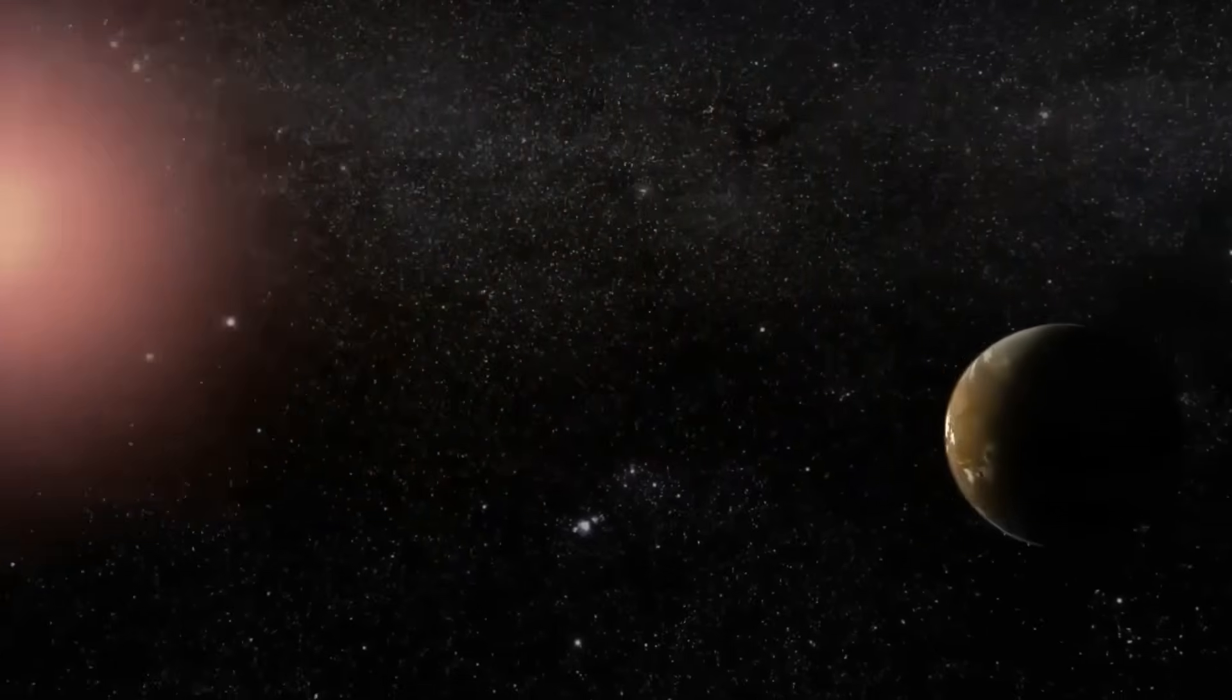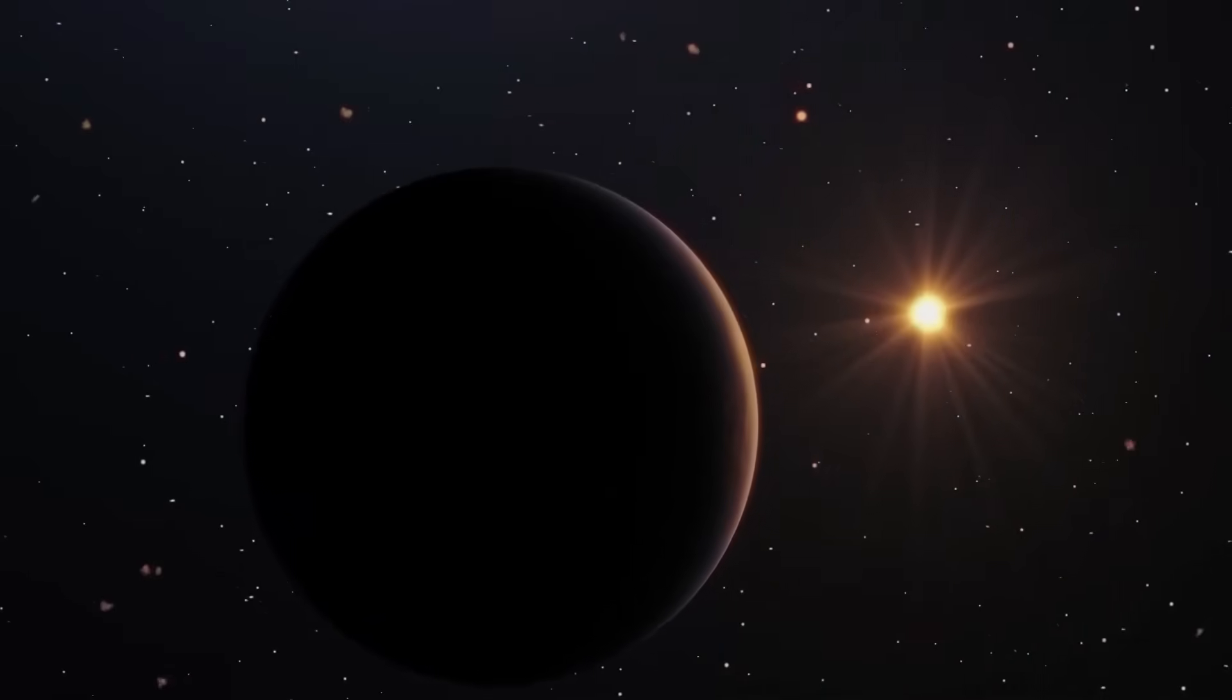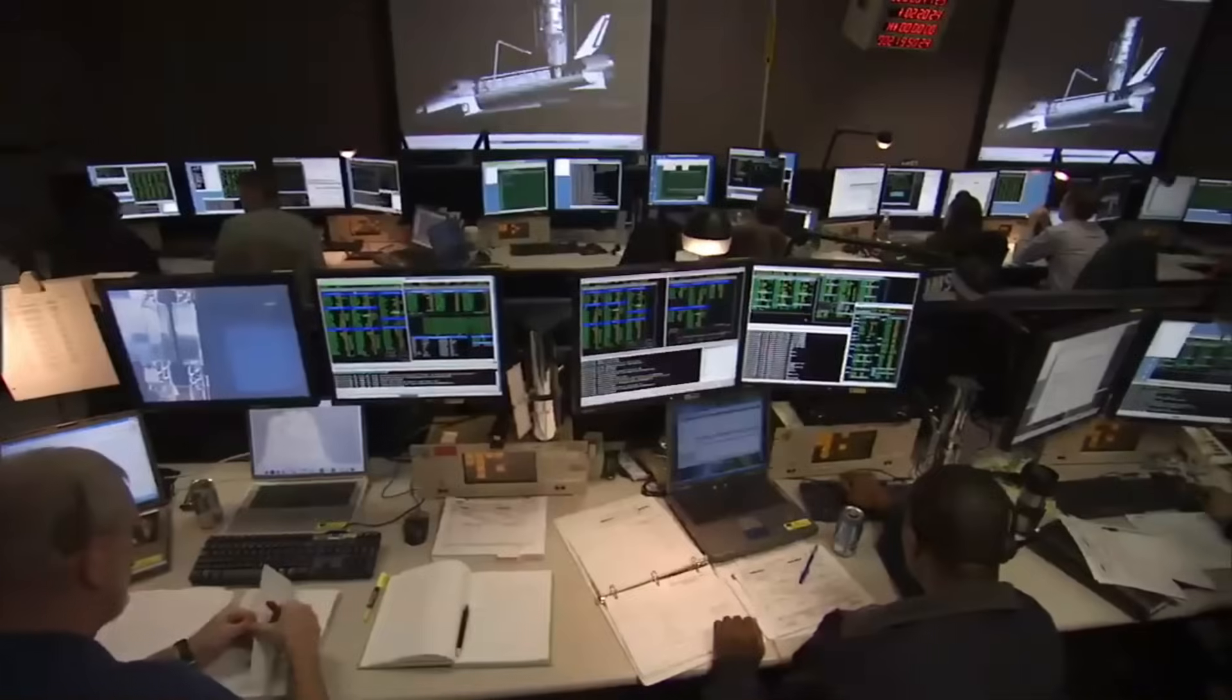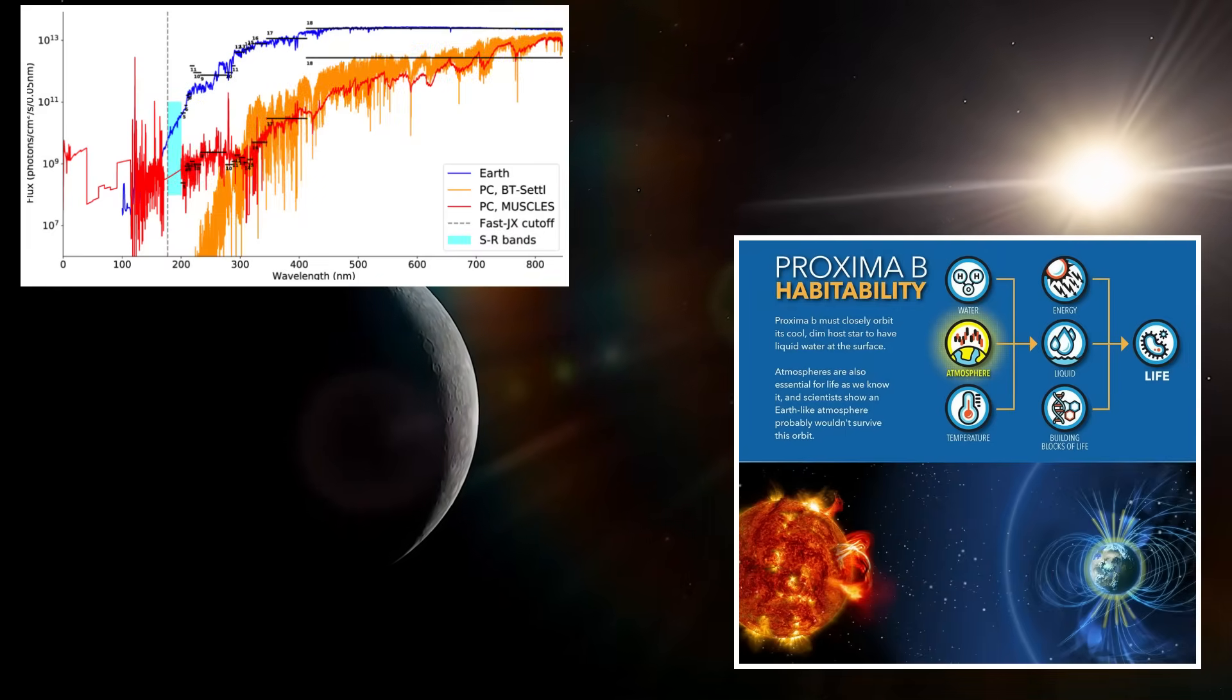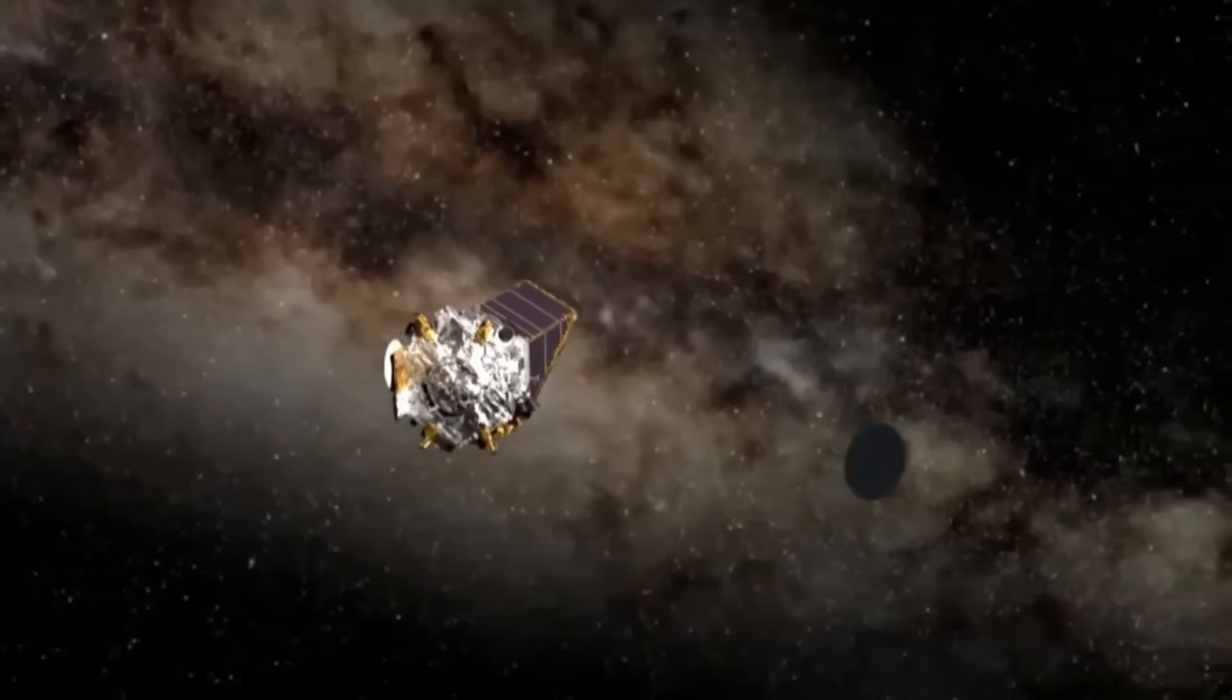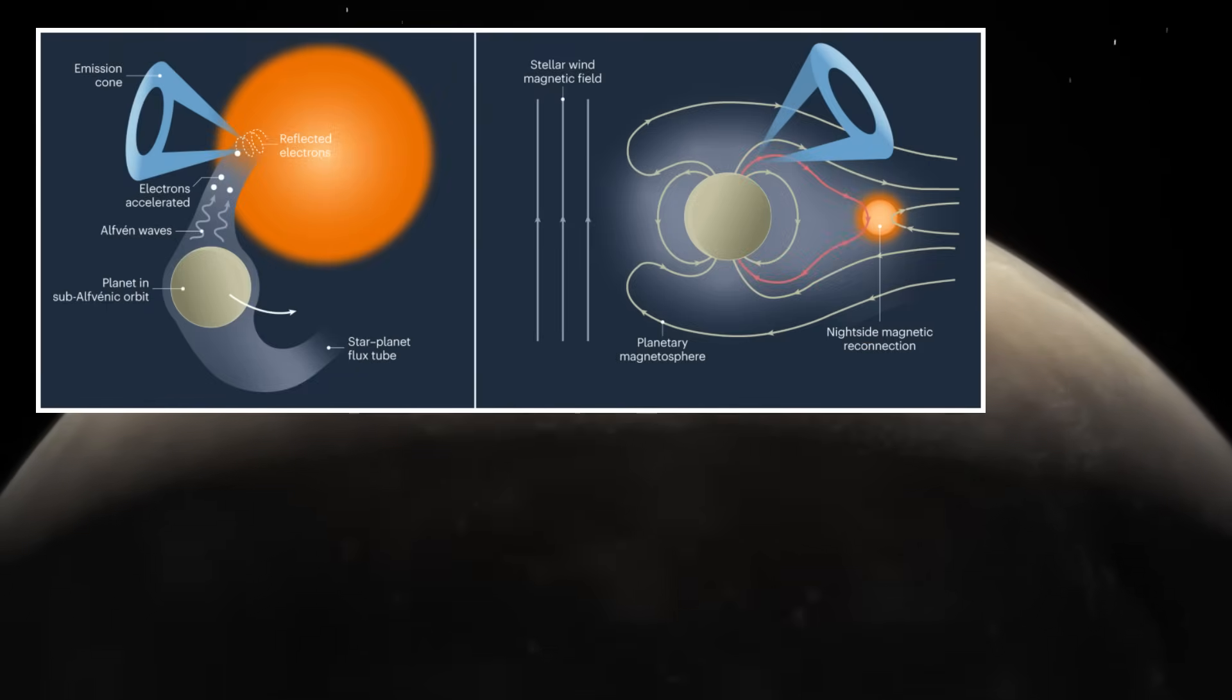Second, polarimetric studies to assess composition. Polarimetric imaging, a technique that measures how light interacts with surface materials, will be used to determine whether the structure is made of crystalline or metallic elements. This could provide the key to identifying its composition and origin. Third, reviewing historical research. Scientists are combing through past exoplanet studies to see if similar anomalies have ever been recorded but overlooked due to technological limitations. If similar structures exist elsewhere, it could provide valuable context for understanding the formation on Proxima b.